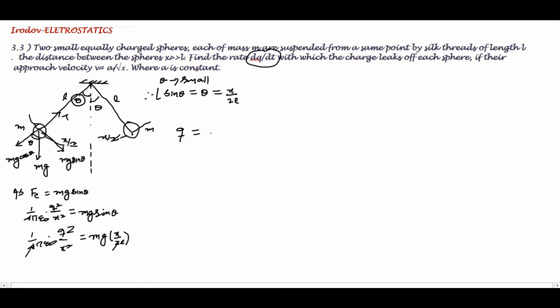When you cancel out the 2, you can write 2π ε₀ × mg/L. This will be the value of q. The left part has X to the power 3/2 because q is squared.